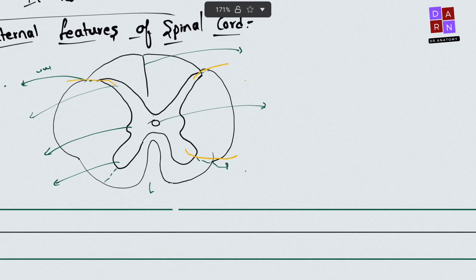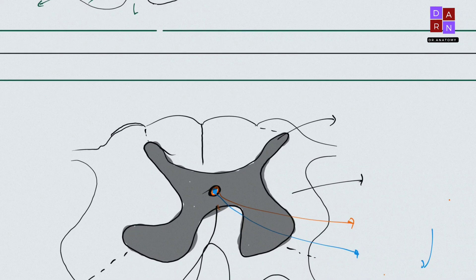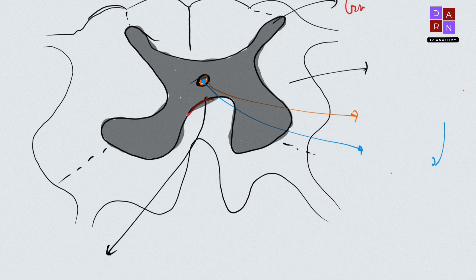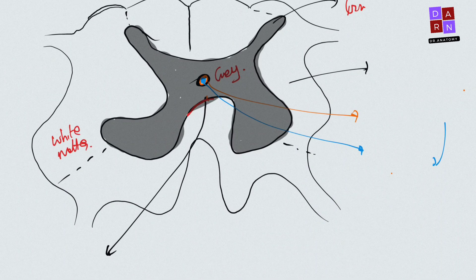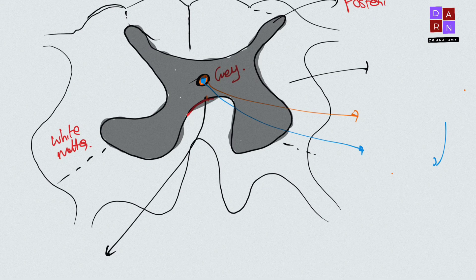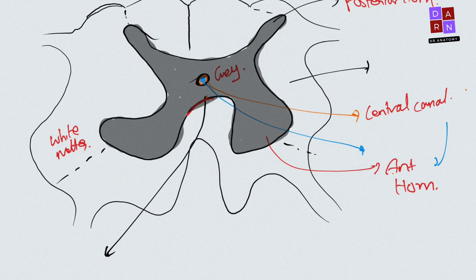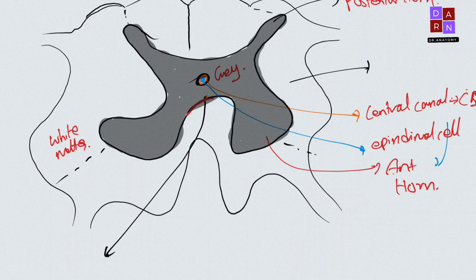Looking at the internal features of the spinal cord: gray matter is present in the center of the spinal cord, and white matter surrounds it. Within the gray matter we have the anterior horn, posterior horn, and the central canal. The central canal is surrounded by ependymal cells, and CSF flows through the central canal.